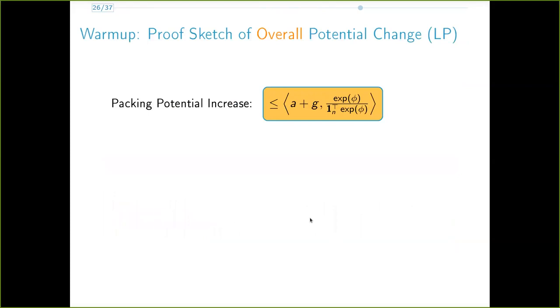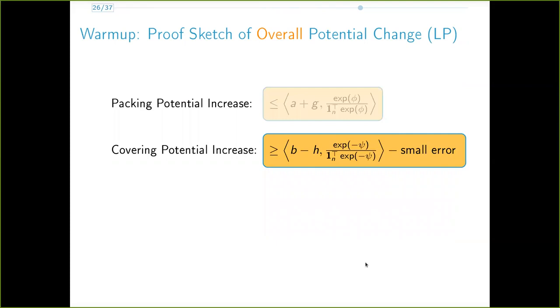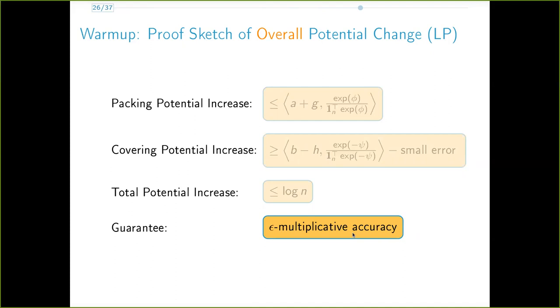Thus, we have this upper bound on the increase in packing potential, a lower bound on the increase in the covering potential, and by some simple algebra, we can conclude that this gives us the claimed potential invariance. As mentioned before, this additive log approximation of the potential gives us the desired epsilon multiplicative guarantee on the solution.